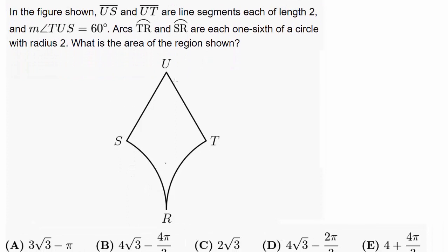In the figure shown, US and UT are line segments, each of length 2. So you know this is length 2, that's length 2. And measure of angle TUS is 60 degrees. And arcs TR and SR are each one-sixth of a circle with radius 2. So there's many things to realize from this diagram.